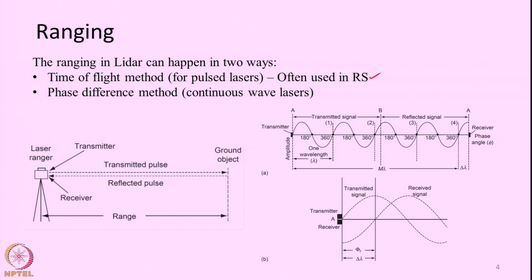The time of flight method, which is often used in remote sensing, works like this: the laser beam will be transmitted towards the target, it will be reflected off the target and come back. The transmitter will measure the time taken for the beam to go and come back, using the simple principle d = ct/2, where c is the velocity of light, t is the time taken for the entire two-way flight, and we divide by 2 because the beam goes forward and comes back. This is the time of flight method, most often used in remote sensing.